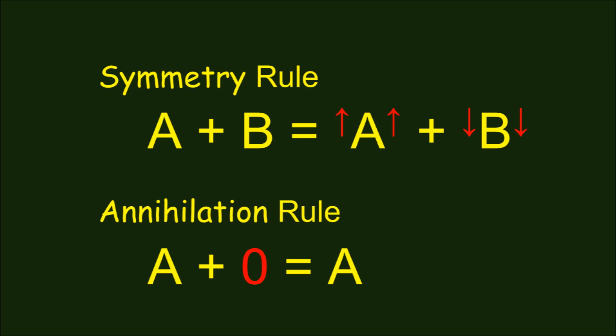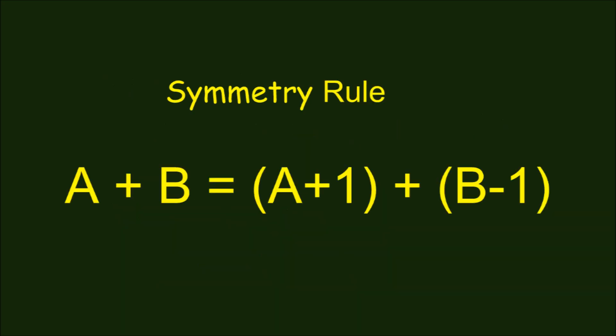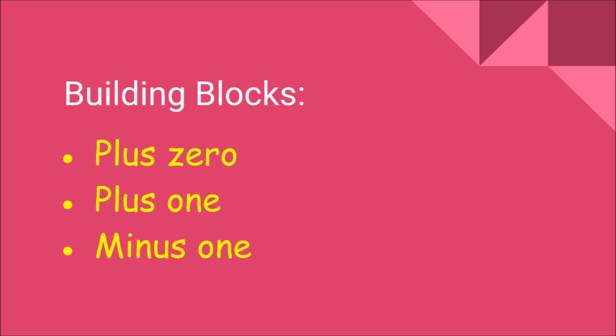At this point, you may object that I'm using plus 1 and minus 1 in each symmetry step of the addition, so this is a circular definition. But at least we've reduced addition down to three concepts. Plus 0, plus 1, and minus 1. We can actually do a little better and state the symmetry rule only using the concept of a little bit bigger.